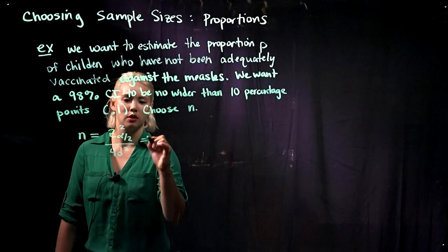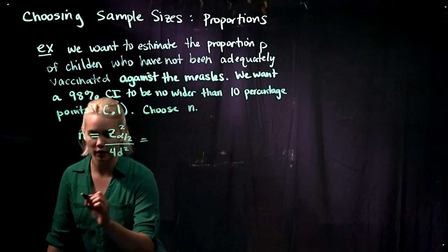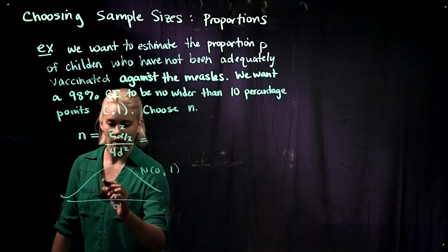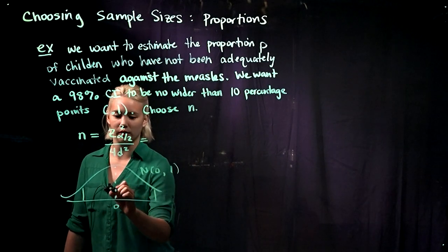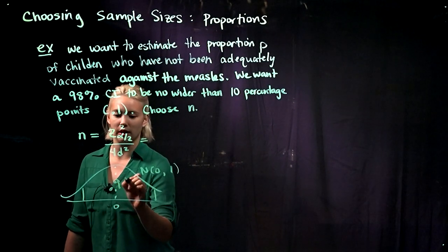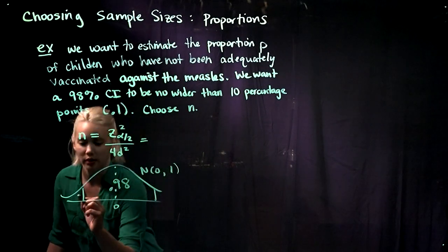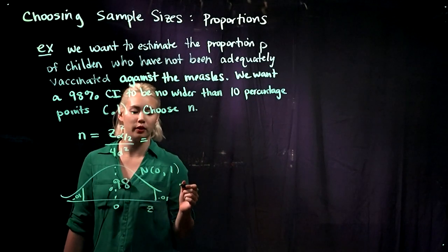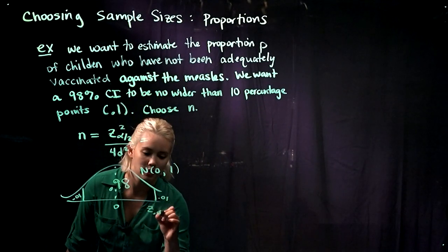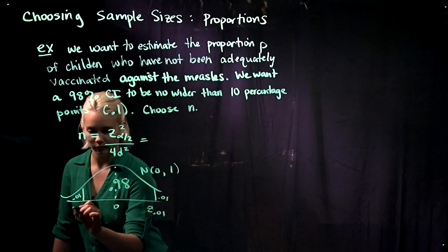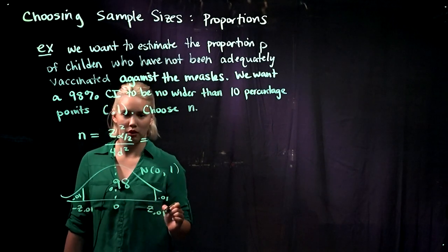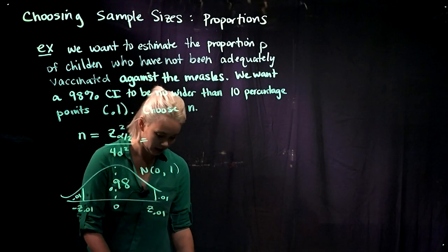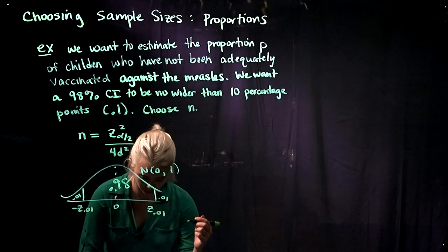If we want to have a 98% level of confidence, so we have .98 in the middle here, then that means we're going to have .01 in this tail and .01 in that tail. So when we have z alpha over 2, really that means z .01. If we go to R and use Q norm or a table, then we'll find out that this z .01 is equal to 2.33.